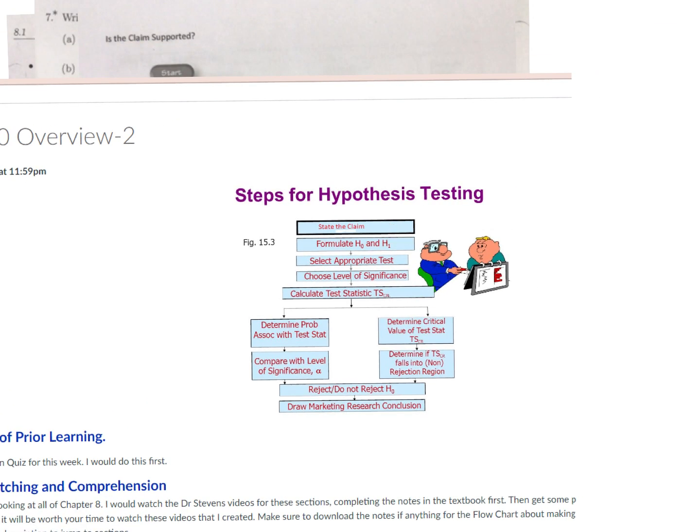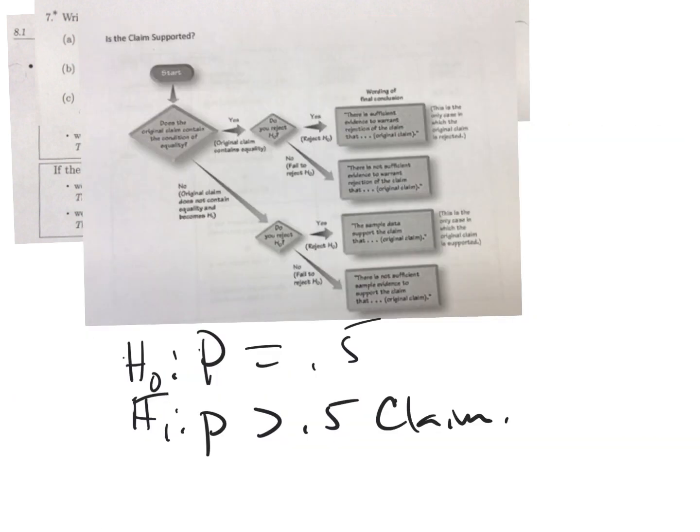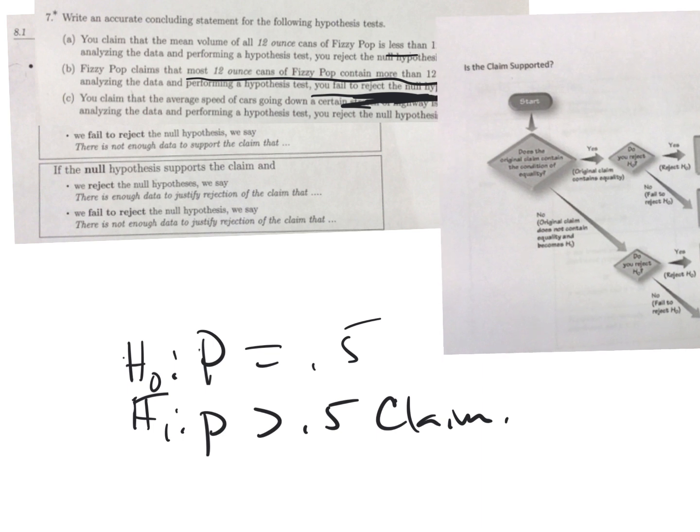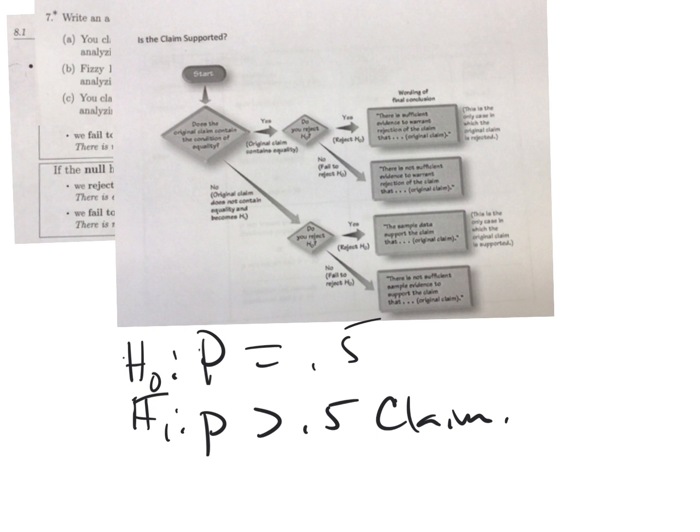This flowchart is like the table you have - you identify is H1 the claim or H0 the claim that has equality? If yes, you go this route. If no, and that's what we have here, H1's the claim, we go this route. Do we reject the null hypothesis? No. Instead of saying there's not enough data, this person says there's not sufficient sample evidence to support the claim that most cans of Fizzy Pop have more than 12 ounces.